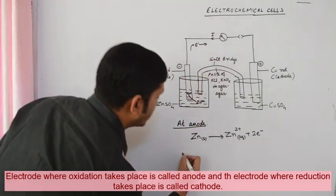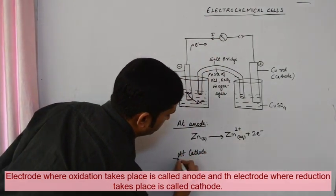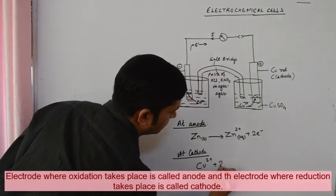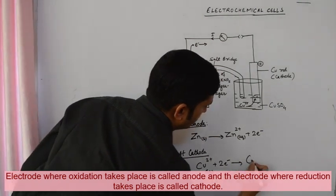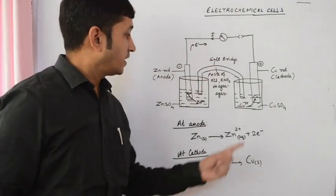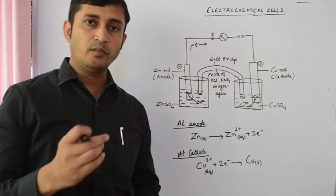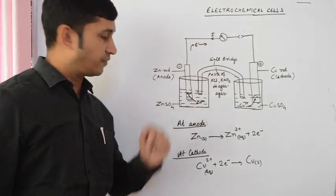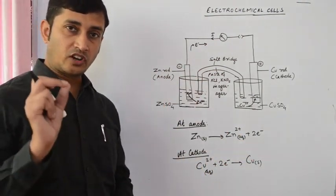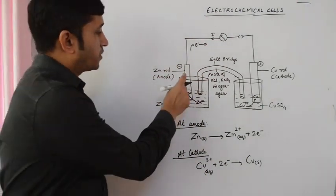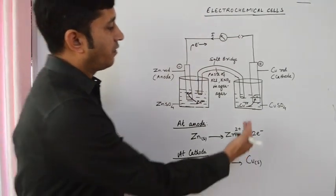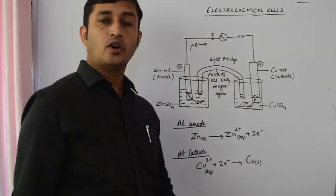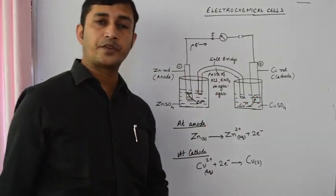At the cathode, copper ions from the solution move towards the rod, take electrons from the rod, and get deposited as copper. As a result, the concentration of copper ions in the solution will decrease. At the anode, since zinc ion concentration is increasing, the solution develops positive polarity while the rod has negative polarity. At the cathode, the solution loses copper ions developing negative polarity, while the rod develops positive polarity. Thus a potential difference is developed between the electrode and the electrolyte.